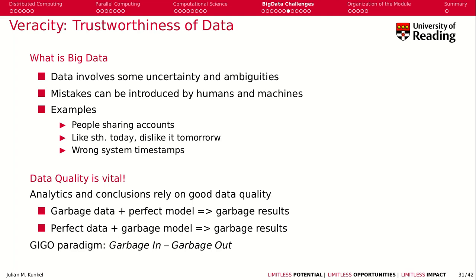Veracity is the trustworthiness of data. In big data, the data you collect has some uncertainty and is ambiguous. Mistakes can be introduced by humans and machines. For example, when you share a loyalty card account, or forget to use it some days, the data you get doesn't accurately reflect the truth. You may also have systems with wrong timestamps and similar errors.